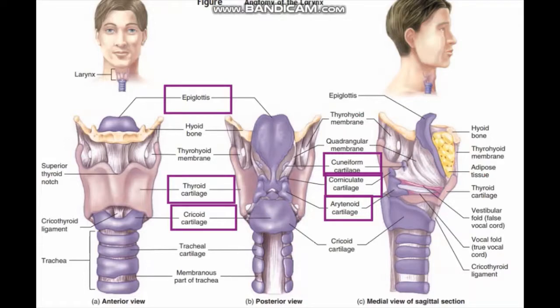This is the epiglottis, this is the thyroid cartilage, and this one is the cricoid cartilage. These are the tracheal rings. This pyramidal-shaped cartilage is the arytenoid cartilage. Above the arytenoid cartilage is the corniculate cartilage, and above the corniculate cartilage is the cuneiform cartilage.